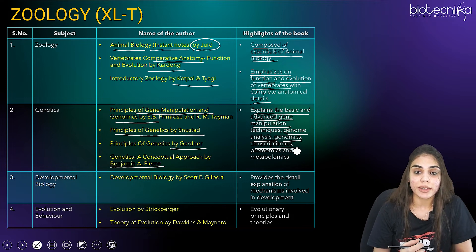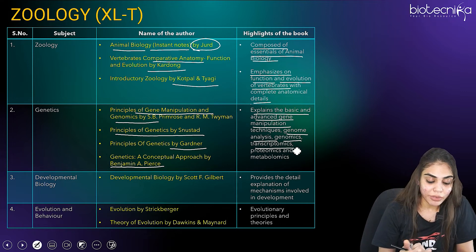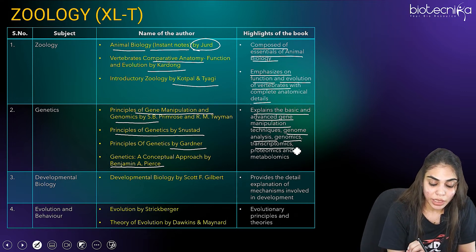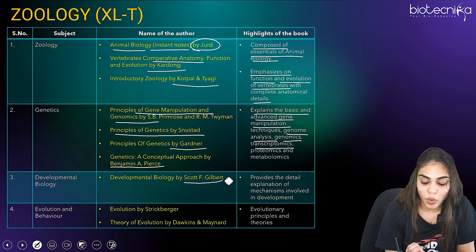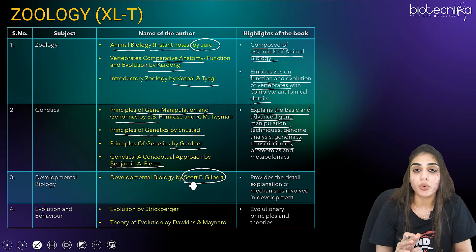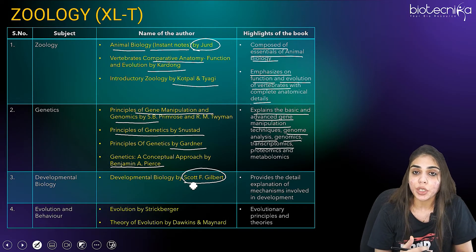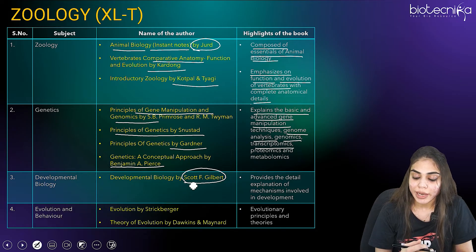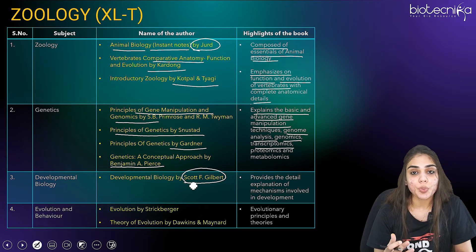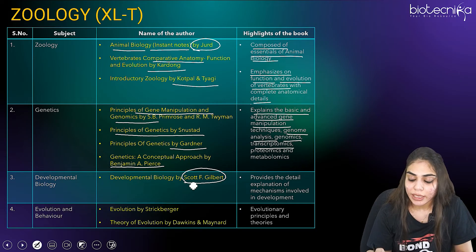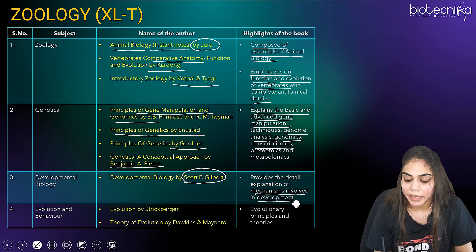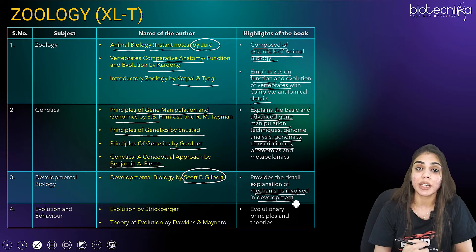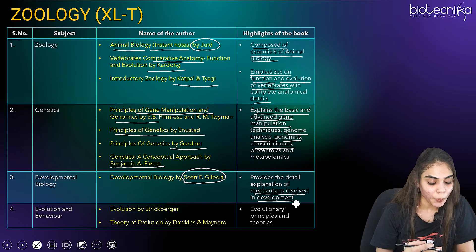The third section under zoology is developmental biology. For this, the most recent and updated book is Developmental Biology by Scott F. Gilbert, 12th edition, which provides detailed explanation of all the mechanisms involved in development.